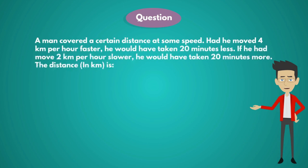Listen, a man covered a certain distance at some speed. Had he moved 4 km per hour faster, he would have taken 20 minutes less. If he had moved 2 km per hour slower, he would have taken 20 minutes more. The distance in kilometers is: Option A: 10, Option B: 11, Option C: 12, Option D: 8, and Option E: none of these.